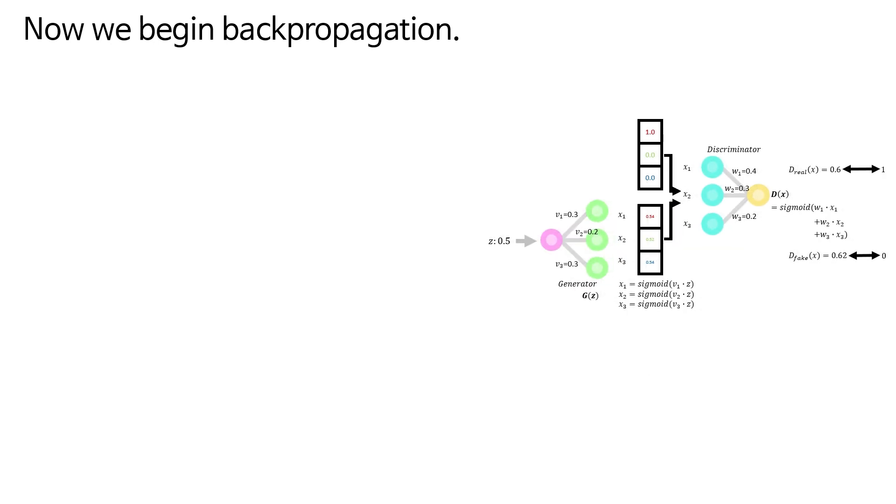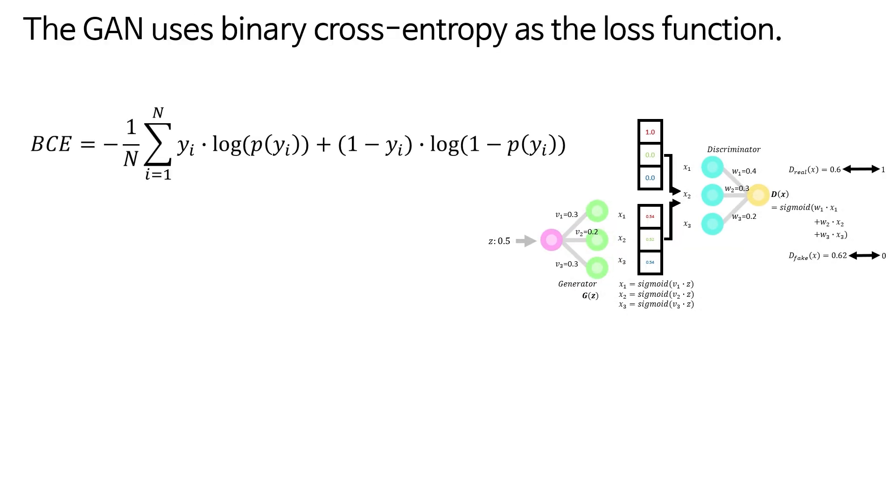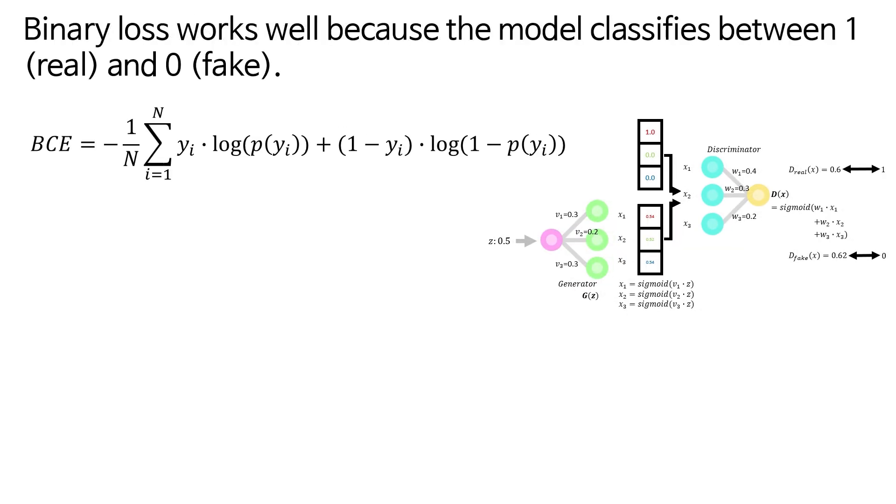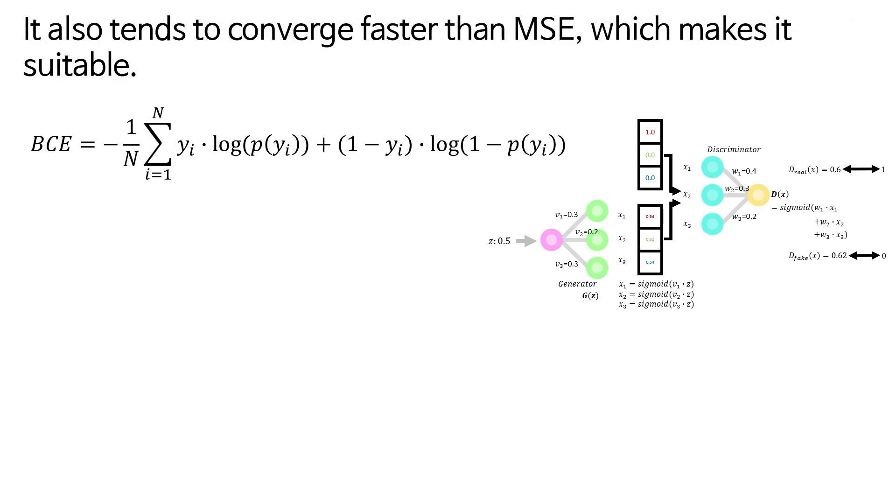The GAN uses binary cross-entropy as the loss function. Binary loss works well because the model classifies between 1 (real) and 0 (fake). It also tends to converge faster than MSE, which makes it suitable.